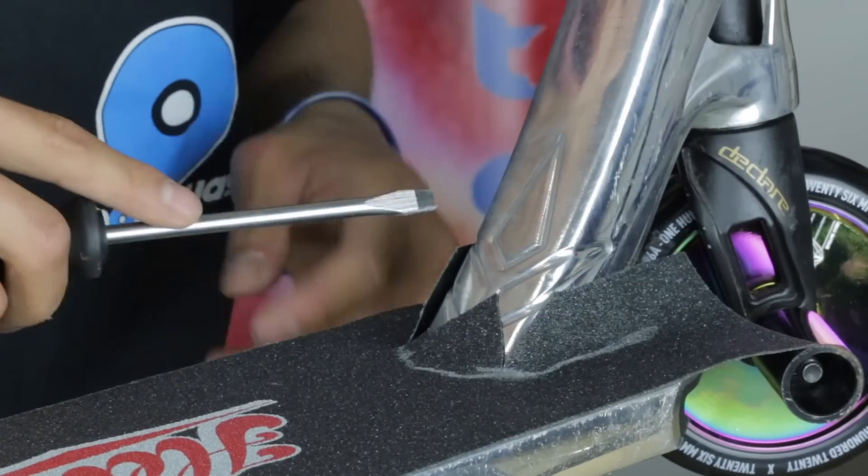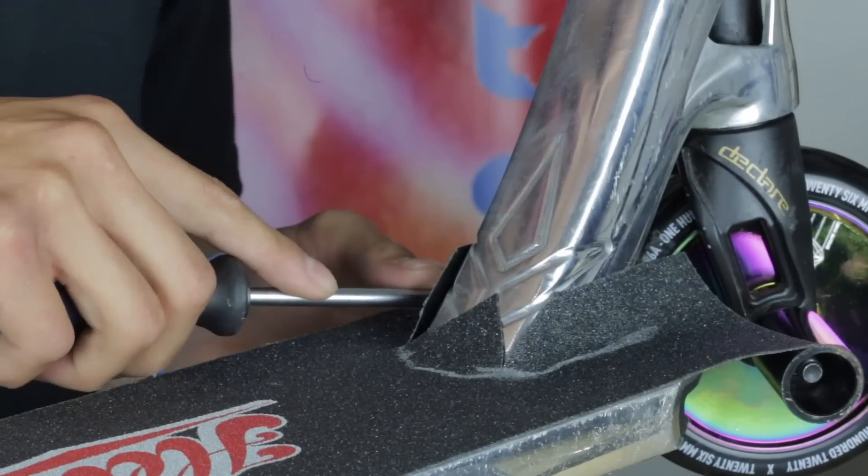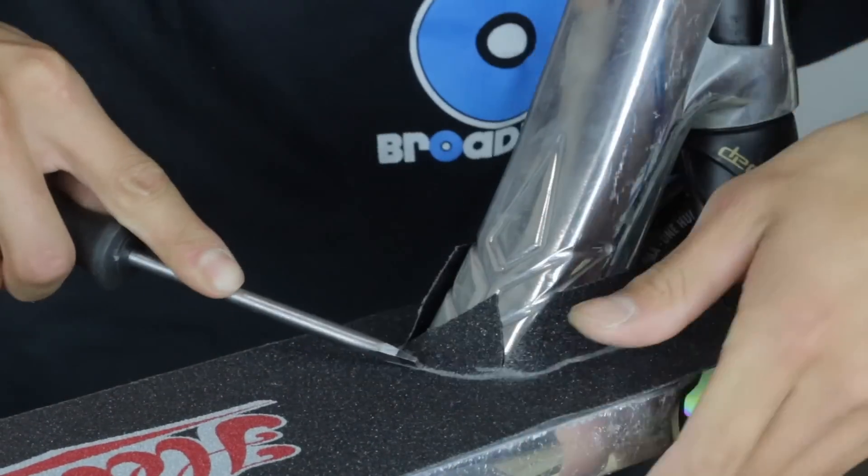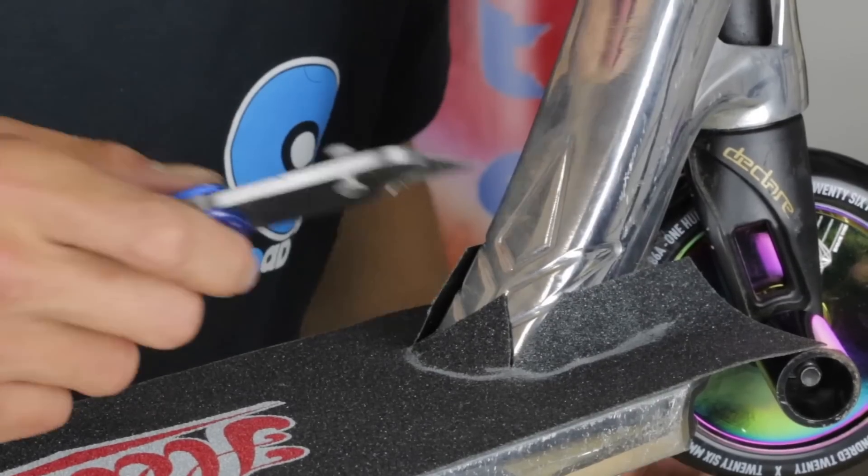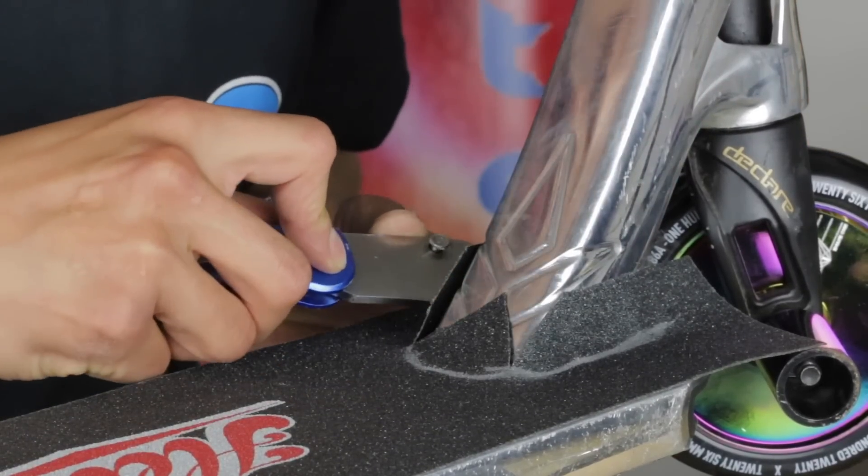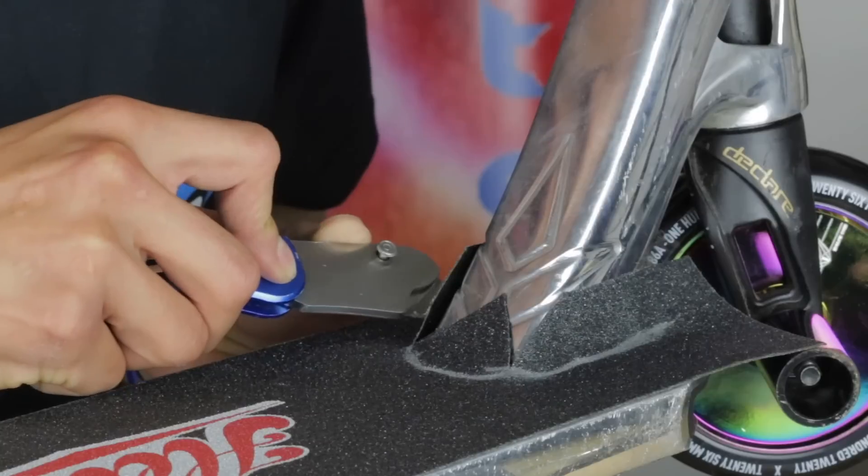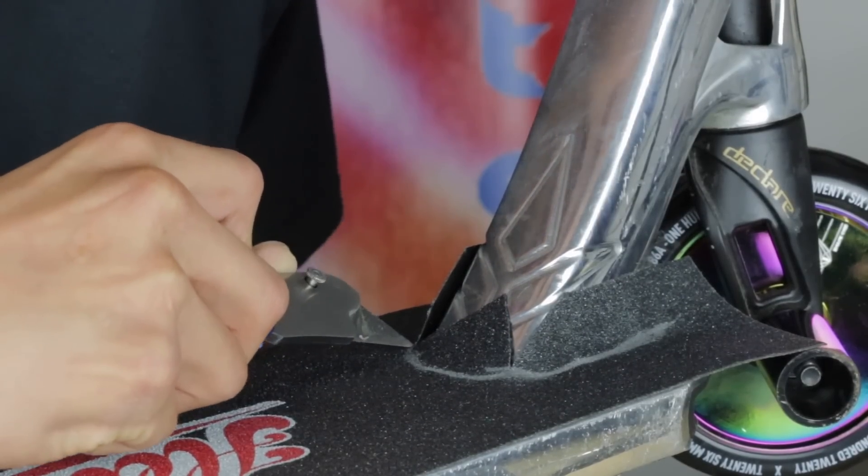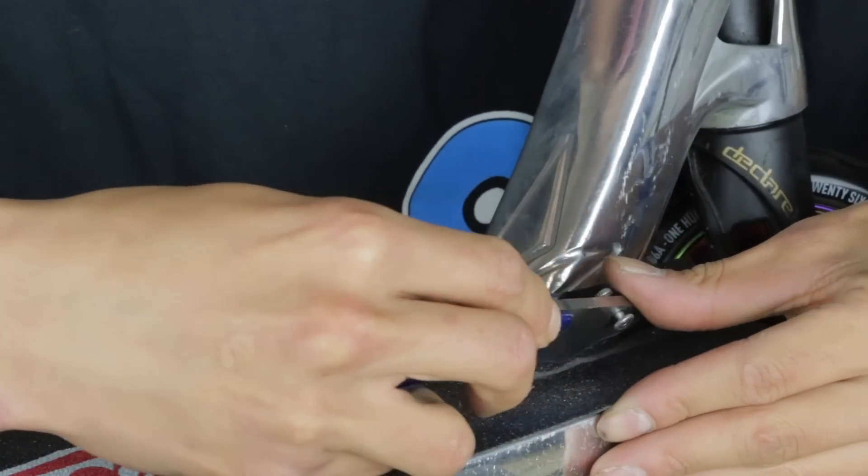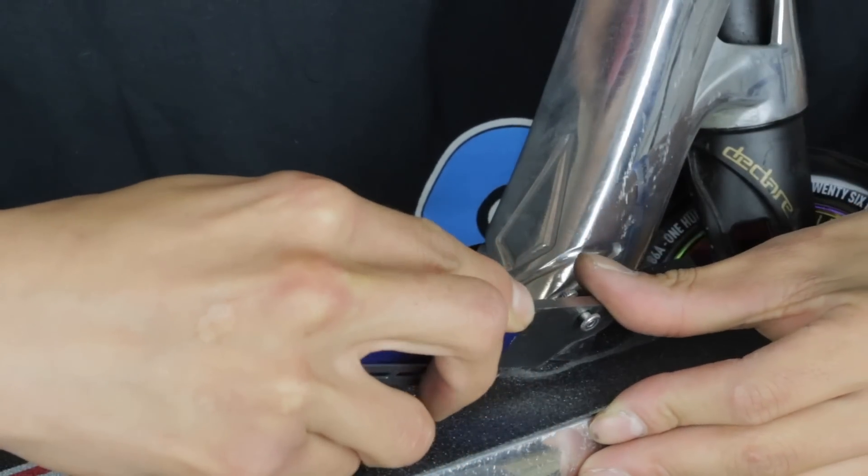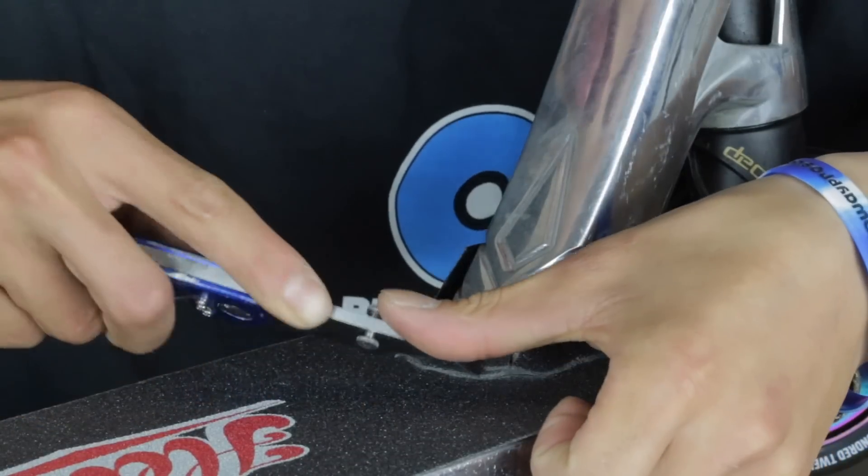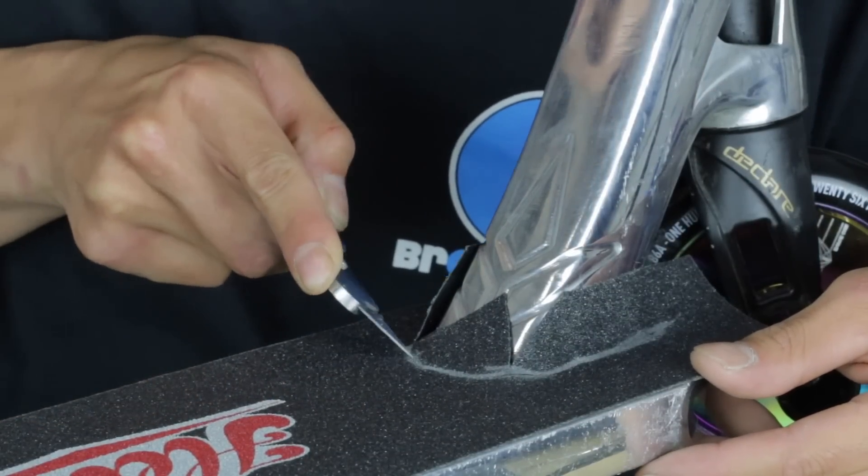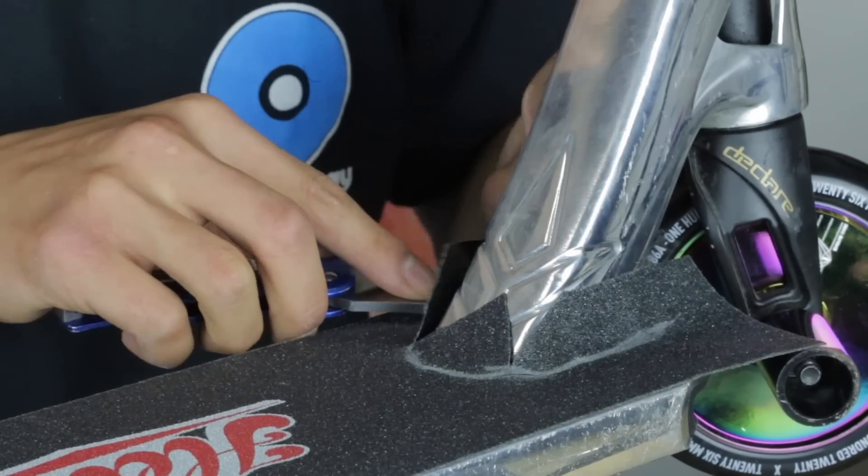Once you do that, just go over it one more time just so that you can cut through it with the blade a lot easier. Now it's time to trace. Just go over with the blade nice and slow so you don't slide off and cut around it by accident. Just peel it off.